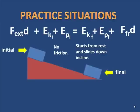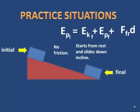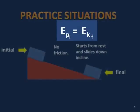Energy must be conserved. At the beginning, is there any external work being done in this system? No, there is not, so we do not include that in the equation. It starts from rest, so there isn't any initial kinetic energy. At the bottom, the potential energy is zero, therefore that is not part of the equation. There's no friction, therefore no work against friction. Both those go. We have the equation: the initial potential energy equals the final kinetic energy.